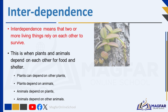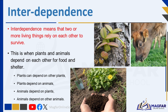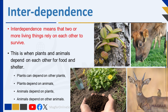For example, plants can depend on other plants, plants can depend on animals, and animals depend on plants. Animals are unable to make their own food; they eat plants or eat animals that eat plants. Therefore, animals depend on plants for food and also shelter in some cases. Animals also depend on other animals, and we will look at these things in more detail.